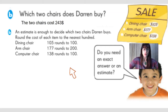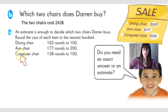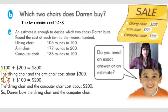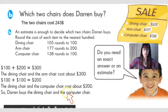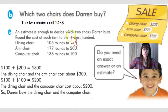We'll round the cost of each item to the nearest hundred. The dining chair was $105 and we round it to $100. The arm chair, $177, rounds to $200. The computer chair, $138, rounds to $100. Now we can tell that if I add the dining chair and the arm chair, the cost will be $300. And if I add the dining chair and the computer chair, the cost is about $200. We know that he spent $243, so Darren buys the dining chair and the computer chair. All we needed to use in this scenario was an estimate.